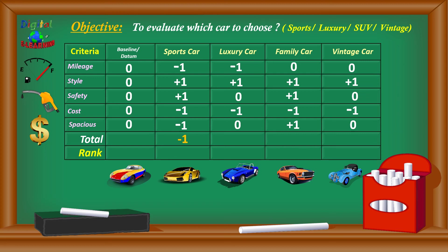The sports car total sums to minus one, and the luxury car also sums to minus one. The family car totals plus two, and the vintage car totals plus one. Based on the aggregate totals, the rank one goes to the family car, and rank two goes to the vintage car. The output of this matrix is that the family car is the right option. You can have any number of options or criteria and evaluate which option is best based on multiple criteria.